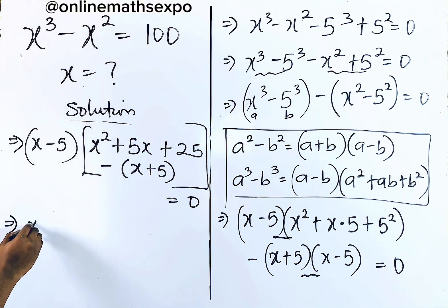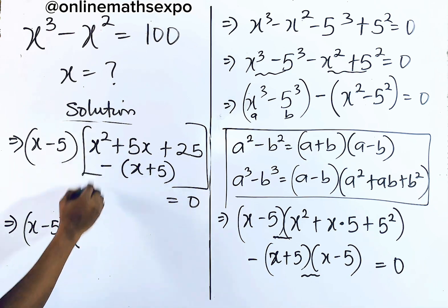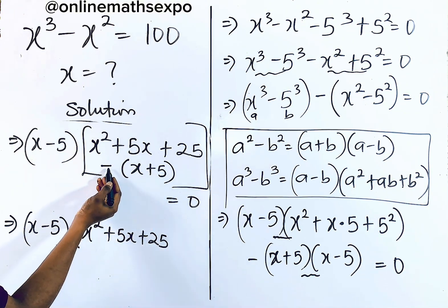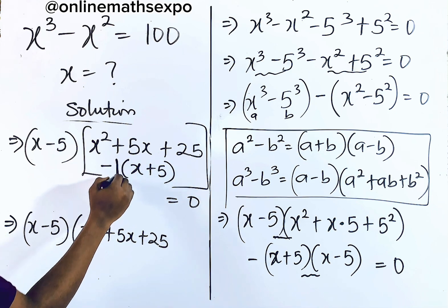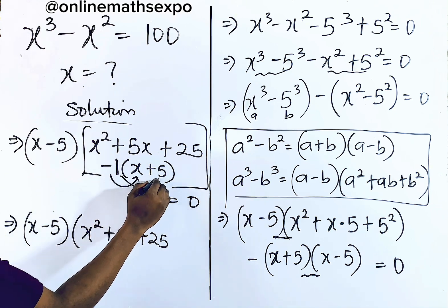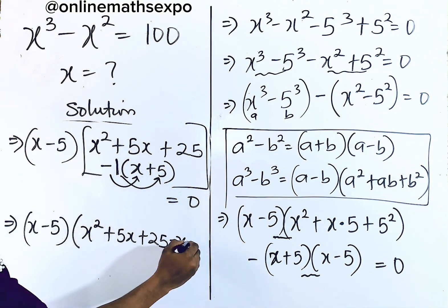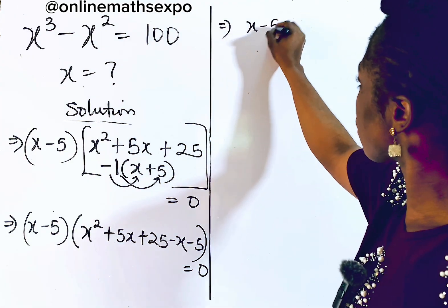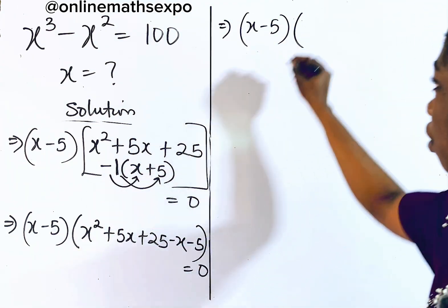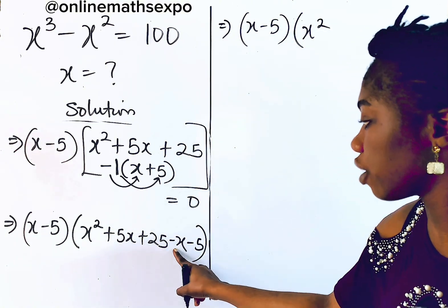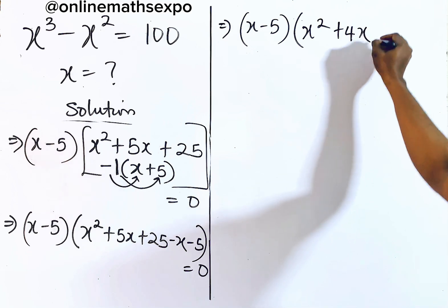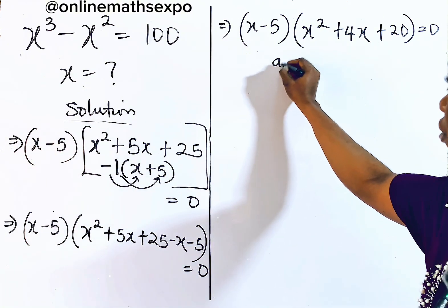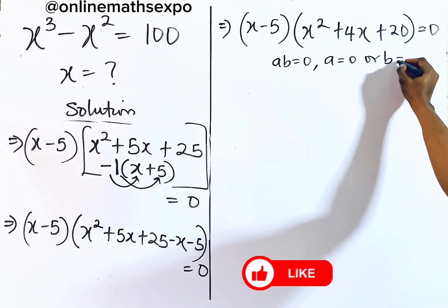So we have (x−5) times (x²+5x+25 − x − 5) equals 0. Expanding: 5x minus x gives 4x, and 25 minus 5 gives 20. This simplifies to (x−5)(x²+4x+20) equals 0. Remember, if a times b equals 0, then either a equals 0 or b equals 0.